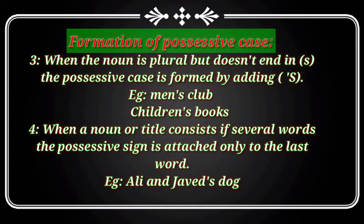For example: Ali and Javed's dog. Here you can see there are two nouns, but only the last one — Javed — takes the apostrophe S. This indicates that Ali and Javed share one dog together — joint ownership.